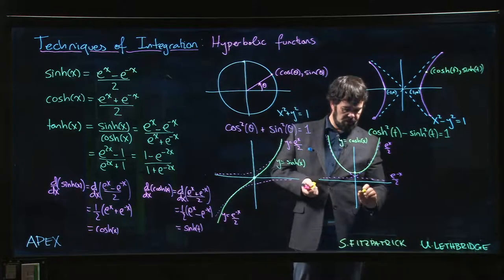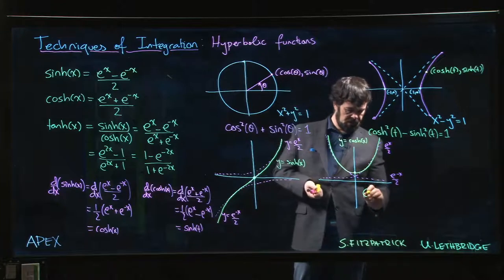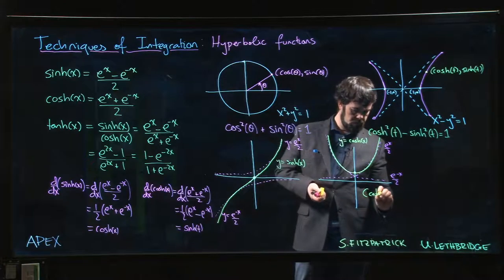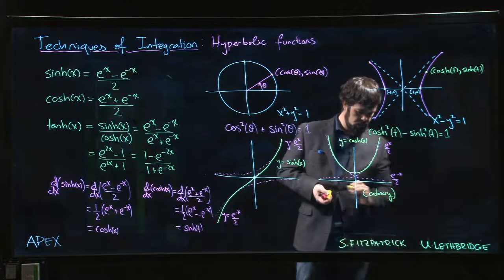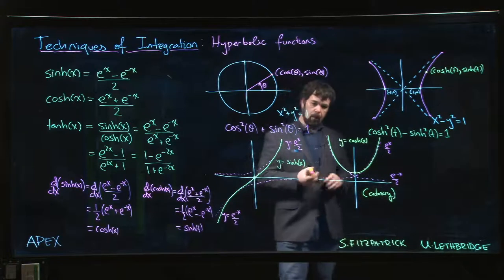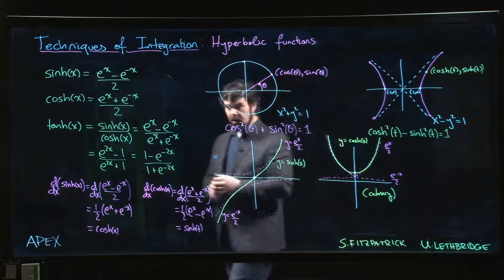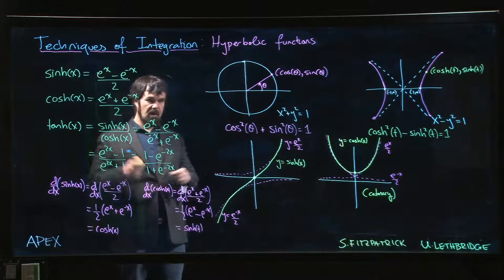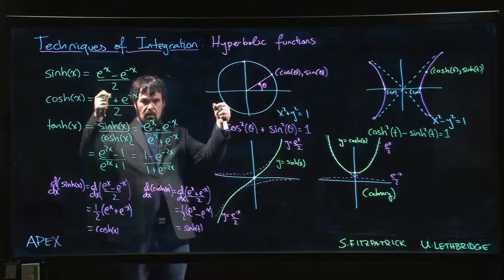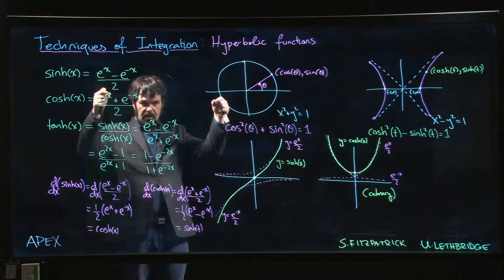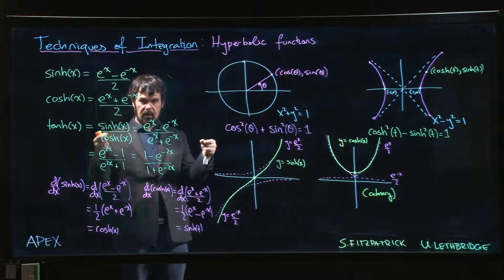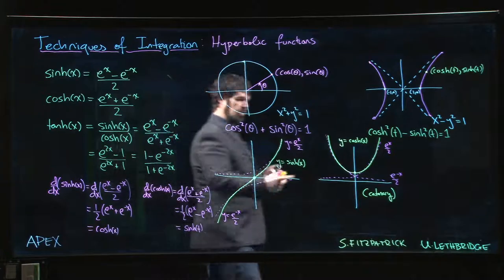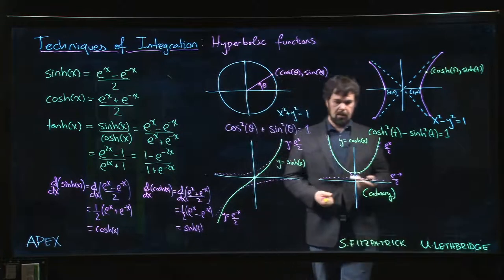This curve, by the way, that you get from the hyperbolic cosine is called a catenary. And the catenary is an interesting curve; it solves a number of classical problems. A catenary is the shape that you get if you take a chain or a rope and you hold it from the two ends and you just let it dangle under the influence of gravity. You get exactly this shape - you get a hyperbolic cosine.